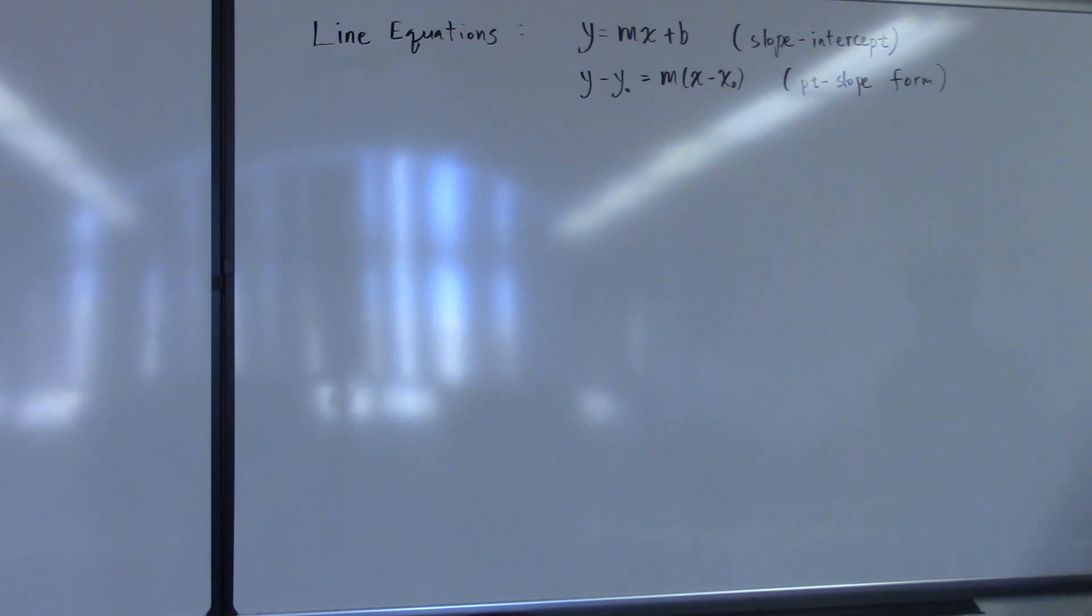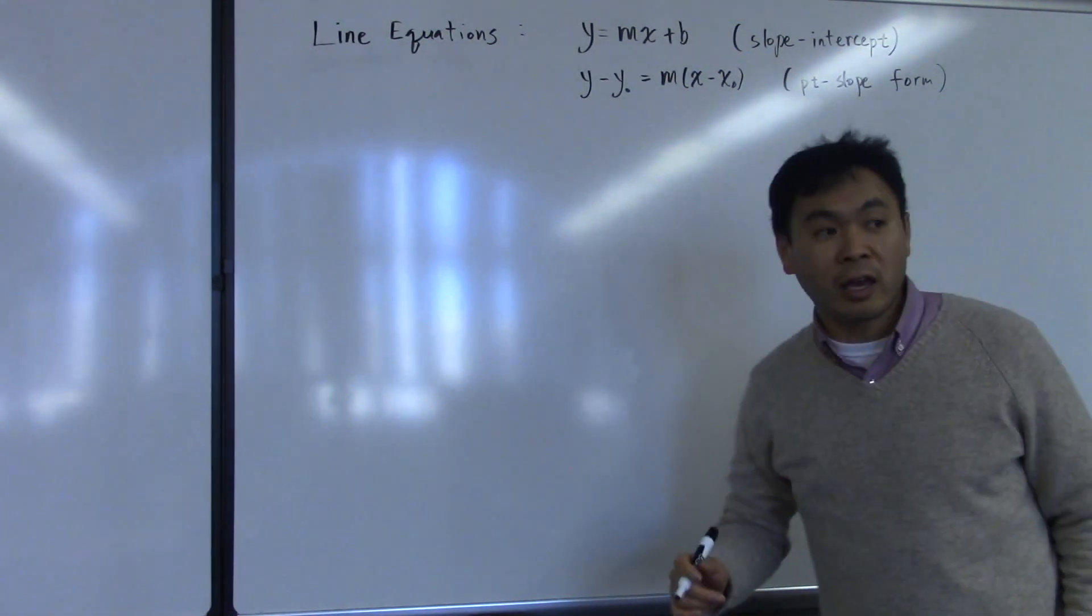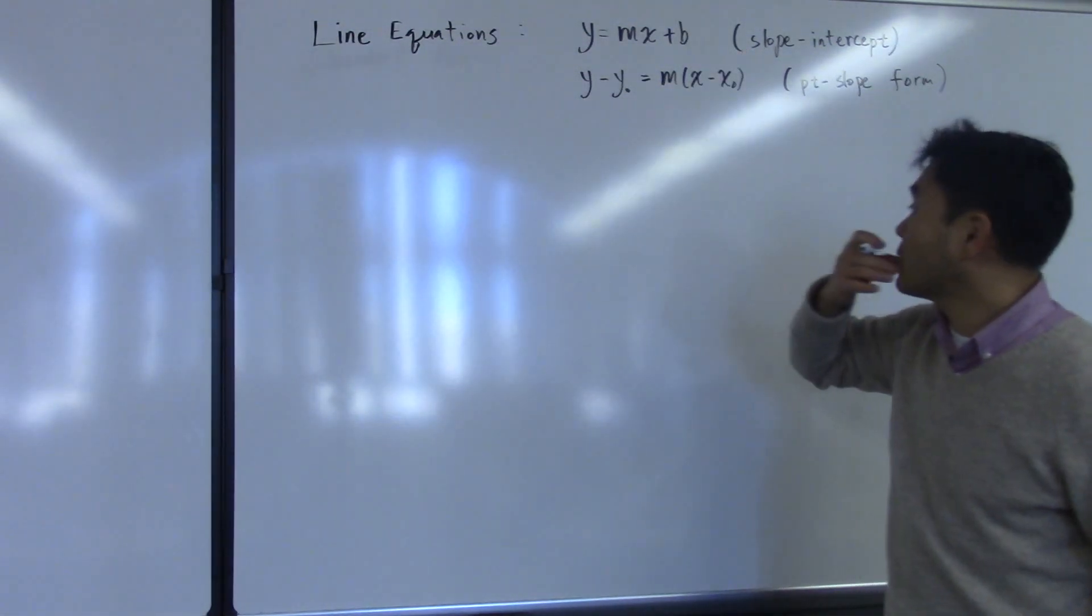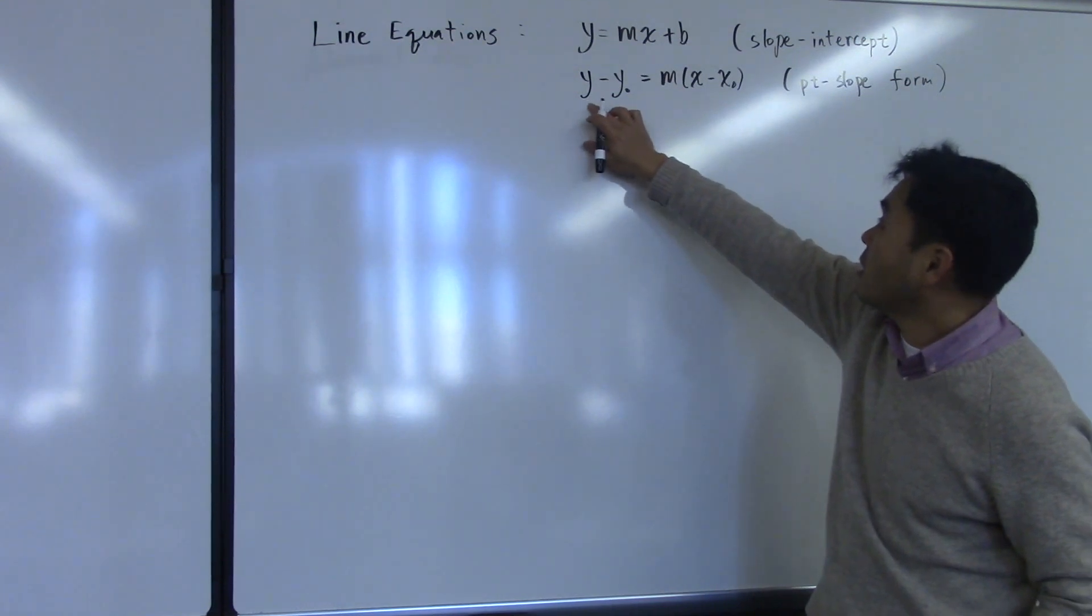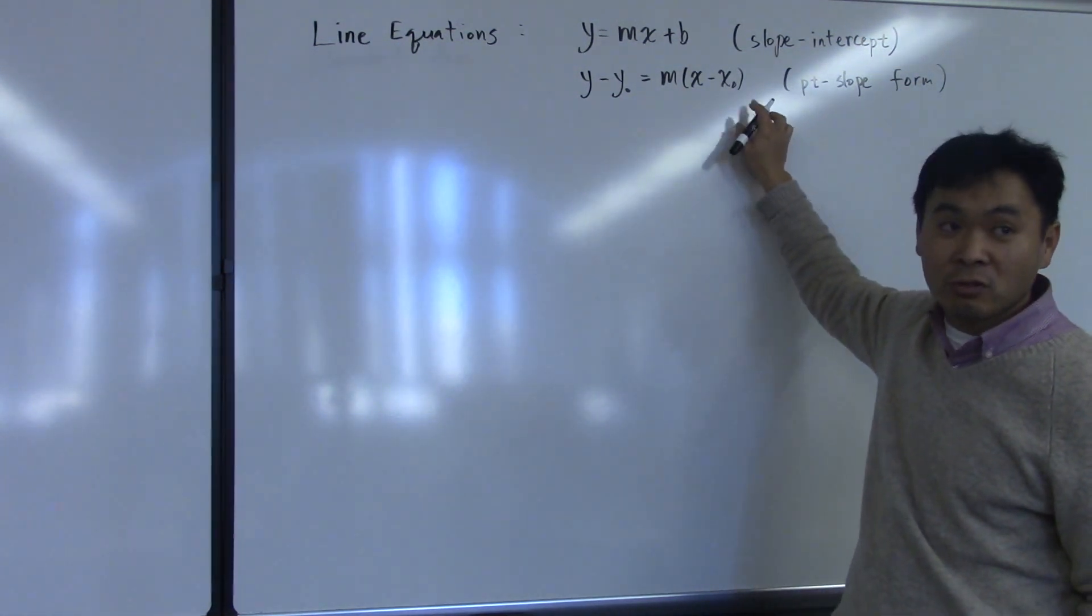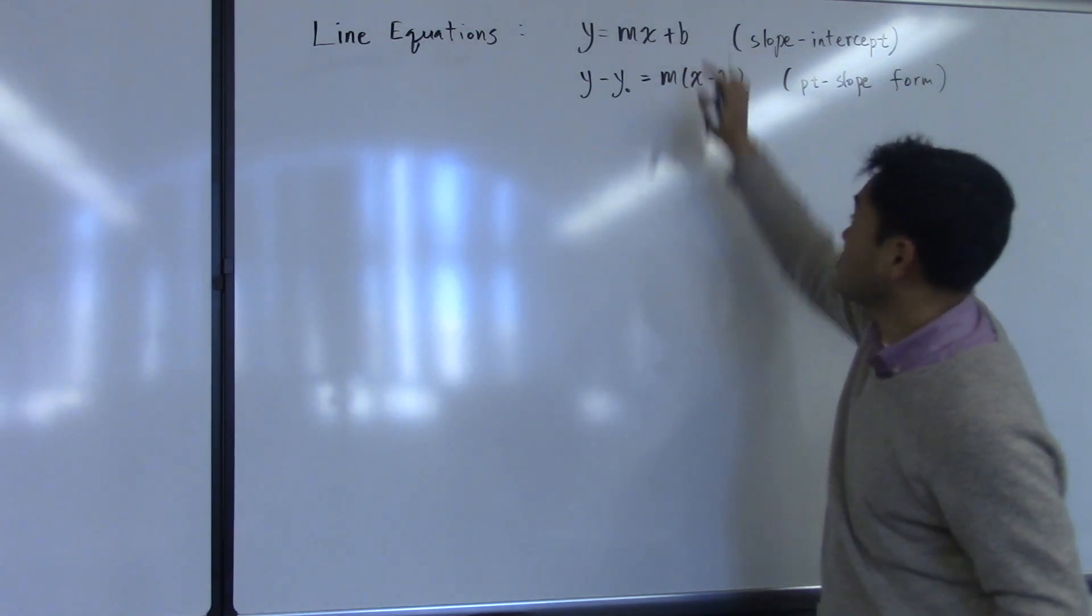Any kind of linear equation, any relation between x and y, can be solved for y to put into slope-intercept form. Therefore, if you use this point-slope form to get the line equation, you can solve this for y to bring it to slope-intercept.